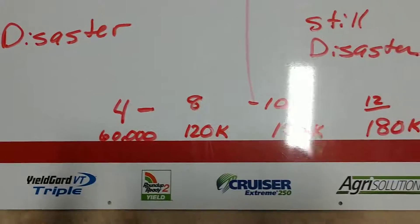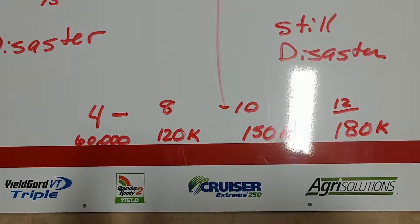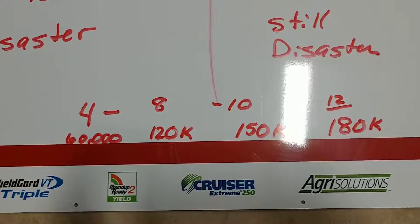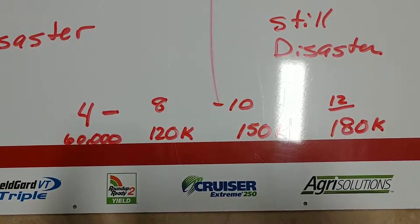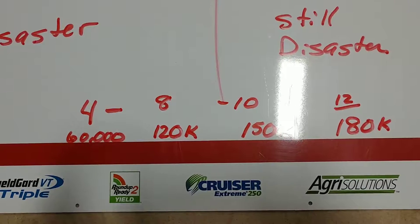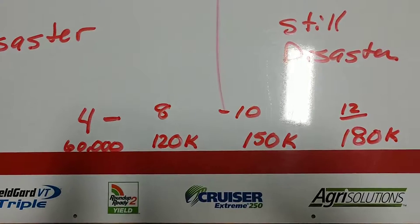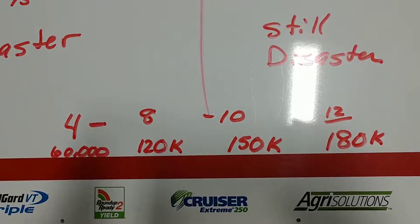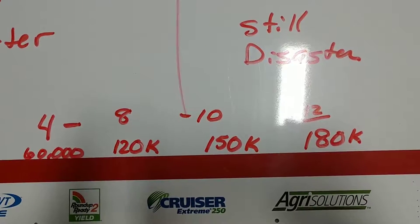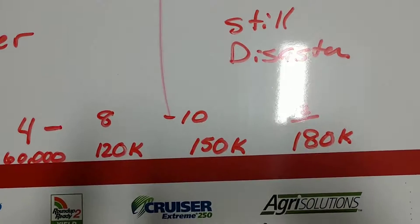So let's look at this. Most of the stuff that we're working with in different germplasm pools, we plant that thing between 4 and 10 pounds, usually between 4 and 8. 4 pounds at 15,000, 60,000 kernels, 120,000 at 8 pounds, 150,000 at 10 pounds, and 180,000 at 12 pounds.